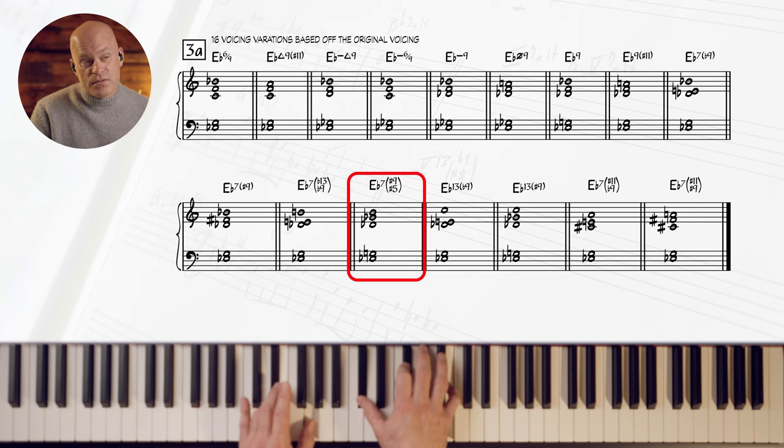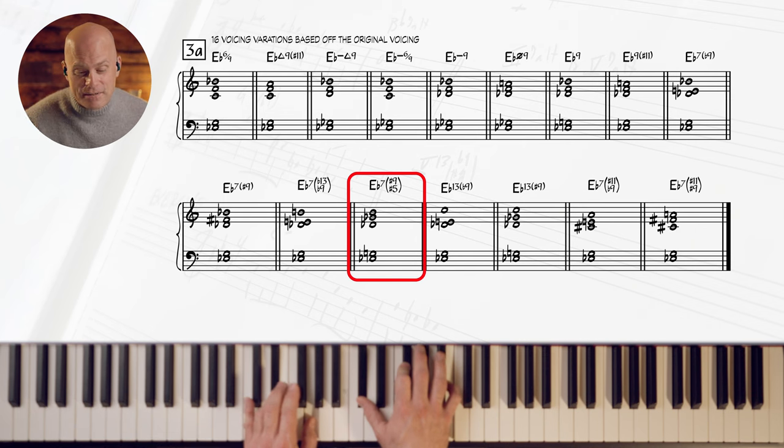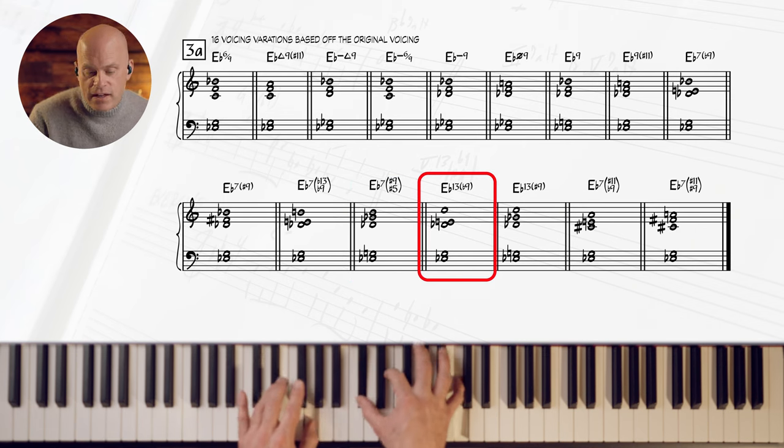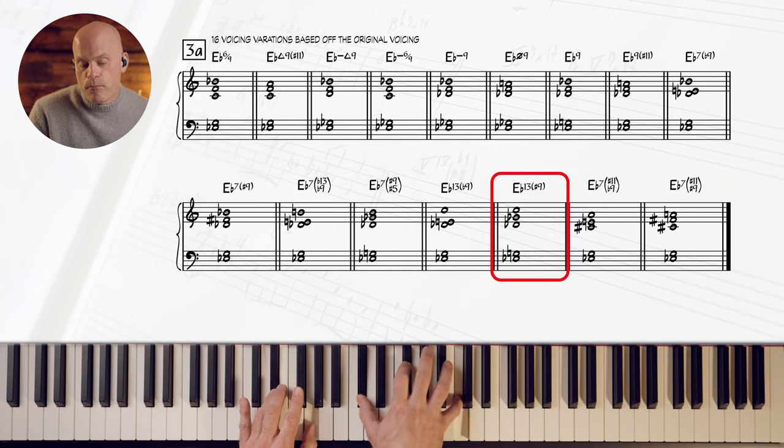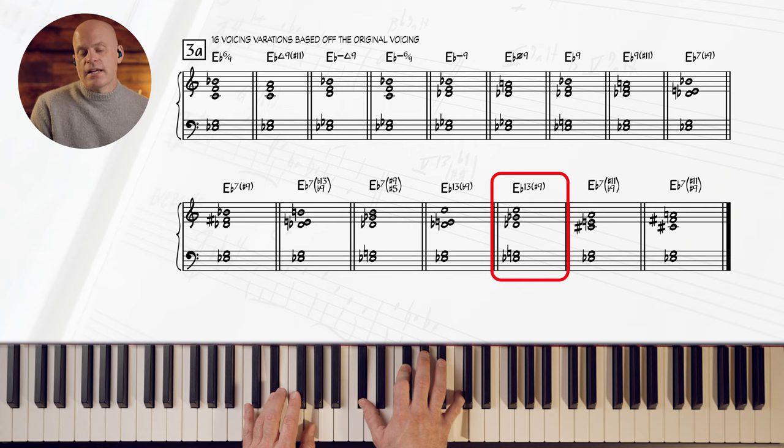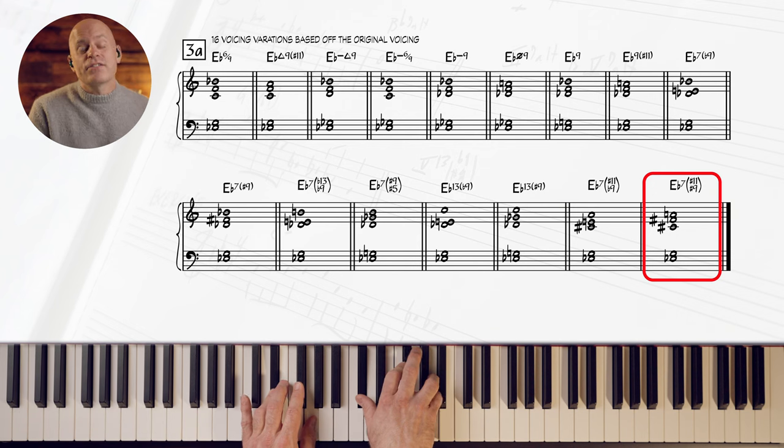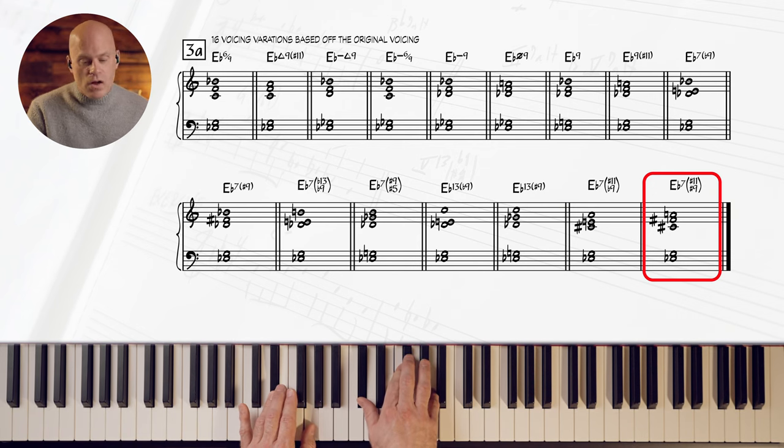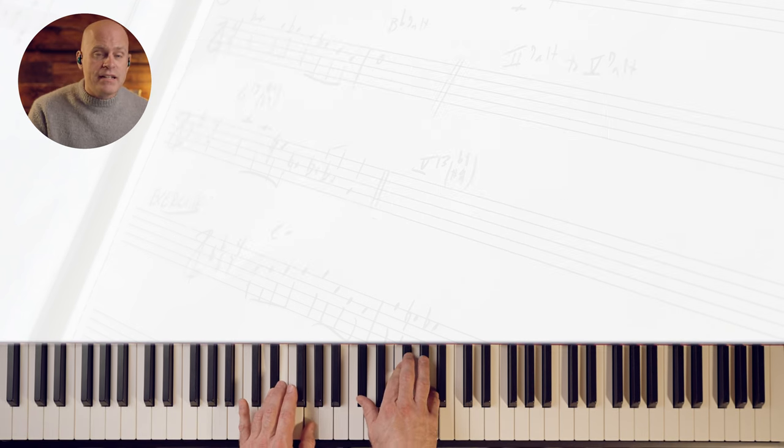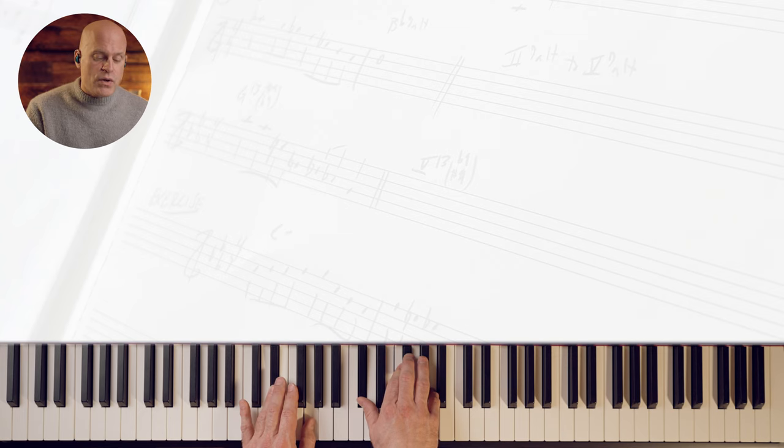Or flat sharp nine flat thirteen. E flat thirteen flat nine. E flat thirteen sharp nine. E flat seven sharp eleven flat nine. E flat seven sharp eleven sharp nine. All from that one chord. 16 voicings you could learn from this. Incredible.